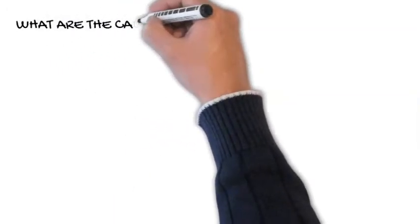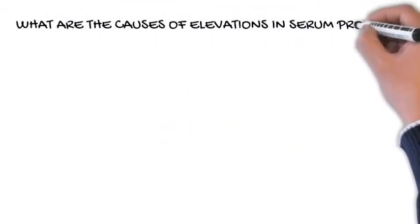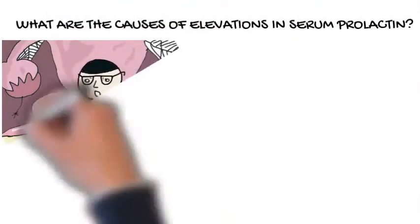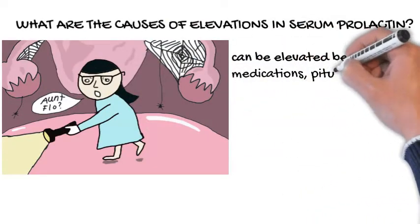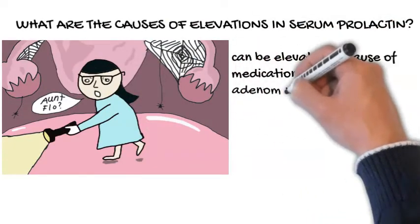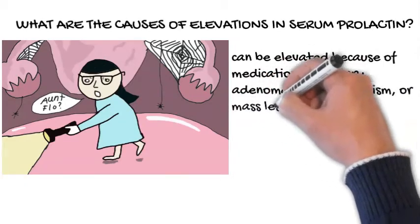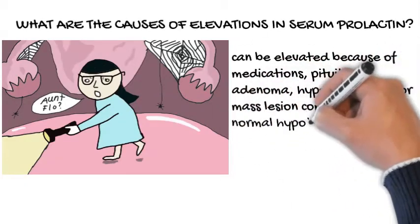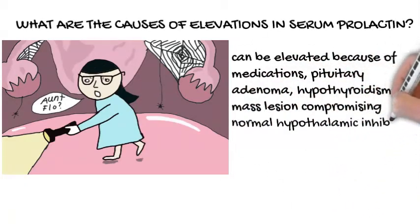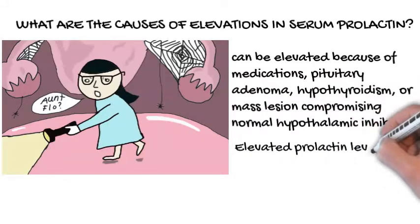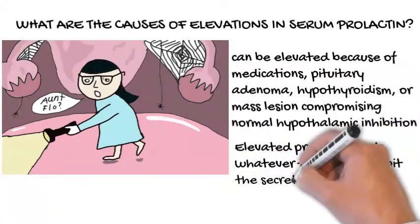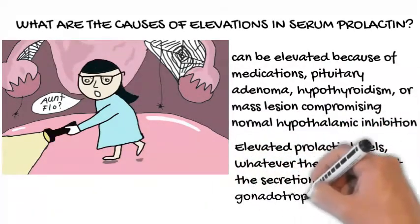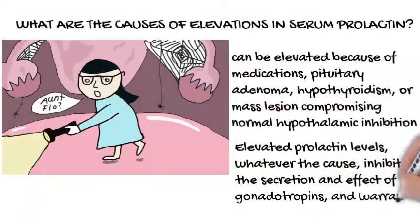What are the causes of elevations in serum prolactin? Prolactin levels can be elevated because of medications, pituitary adenoma, hypothyroidism, or mass lesion compromising normal hypothalamic inhibition. Elevated prolactin levels, whatever the cause, inhibit the secretion and effect of gonadotropins, and warrant MRI of the pituitary.